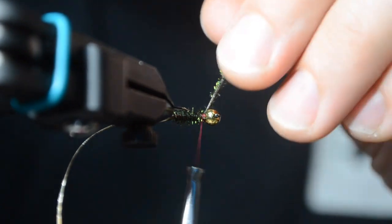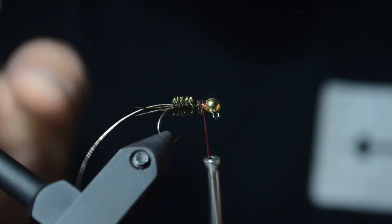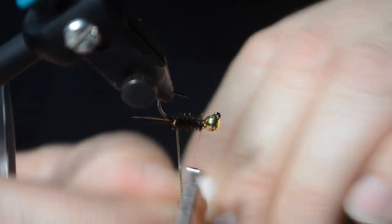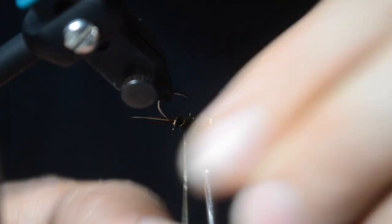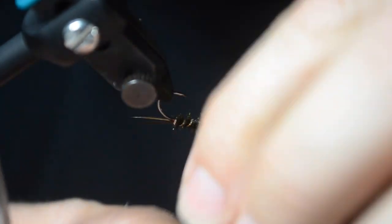And then we can start bringing up the oval tinsel. Now, keep in mind, since this is a jig, it's going to ride hook point up.